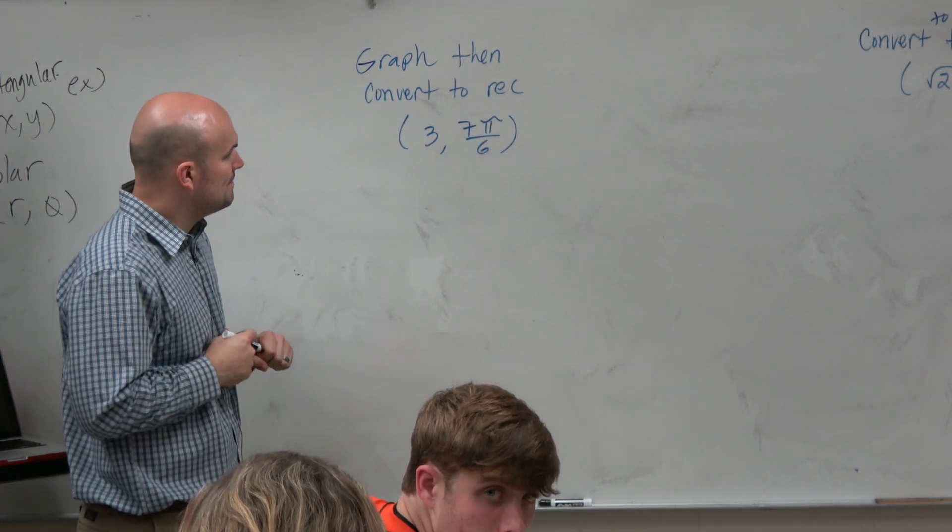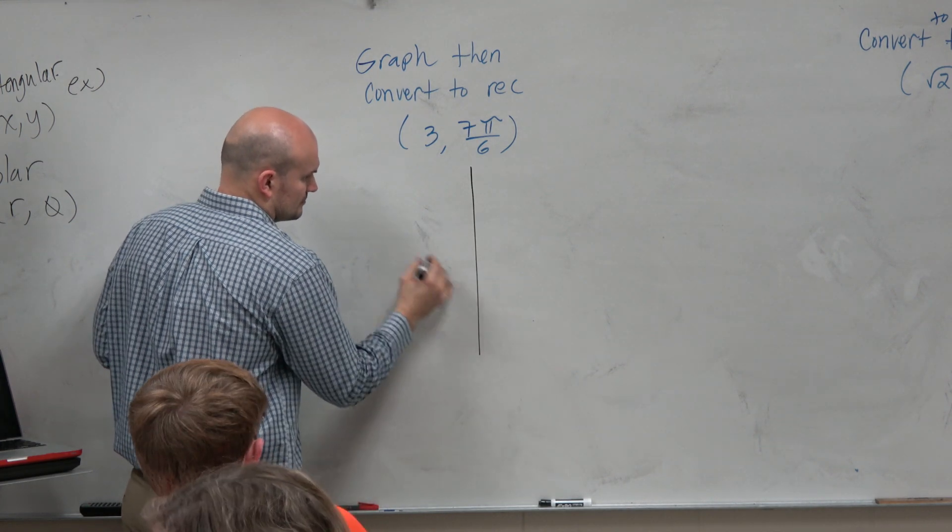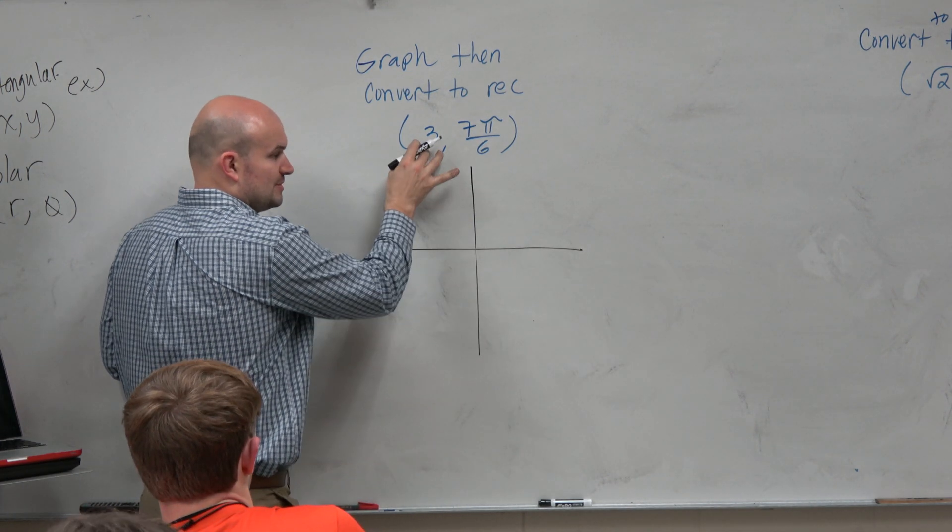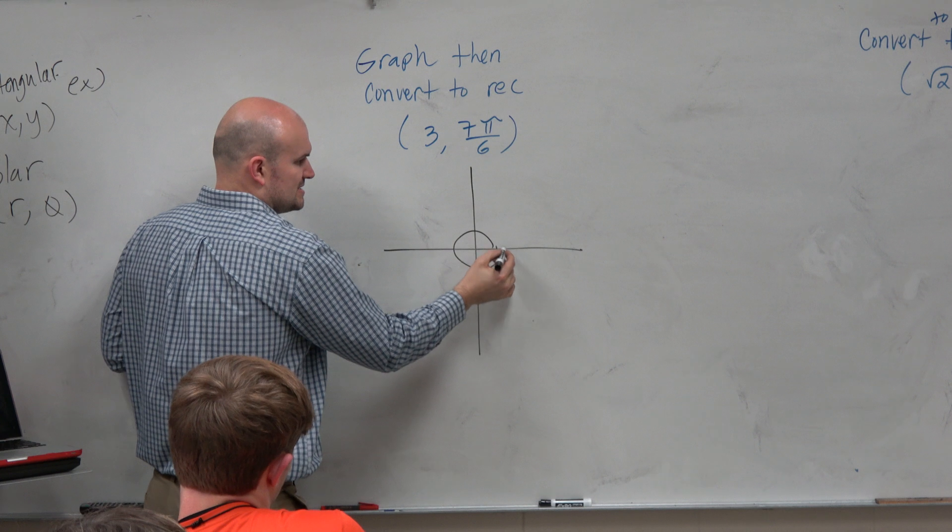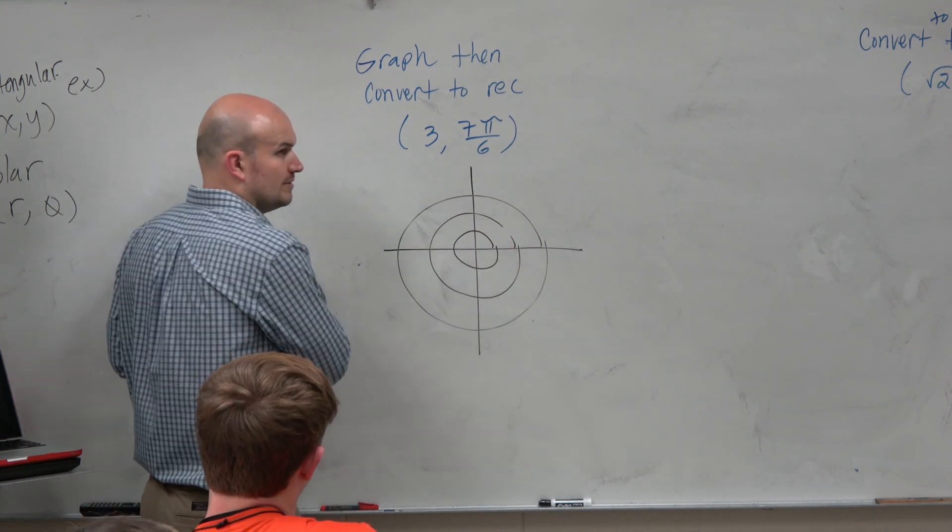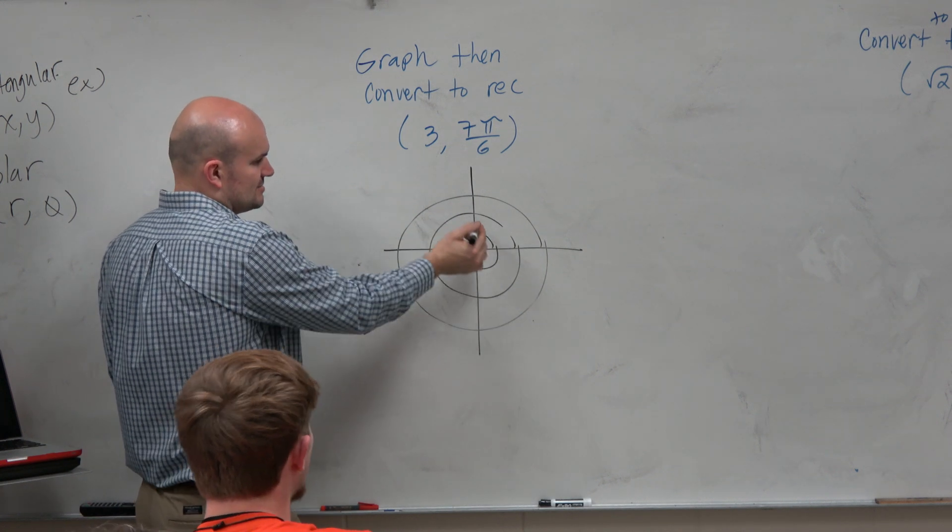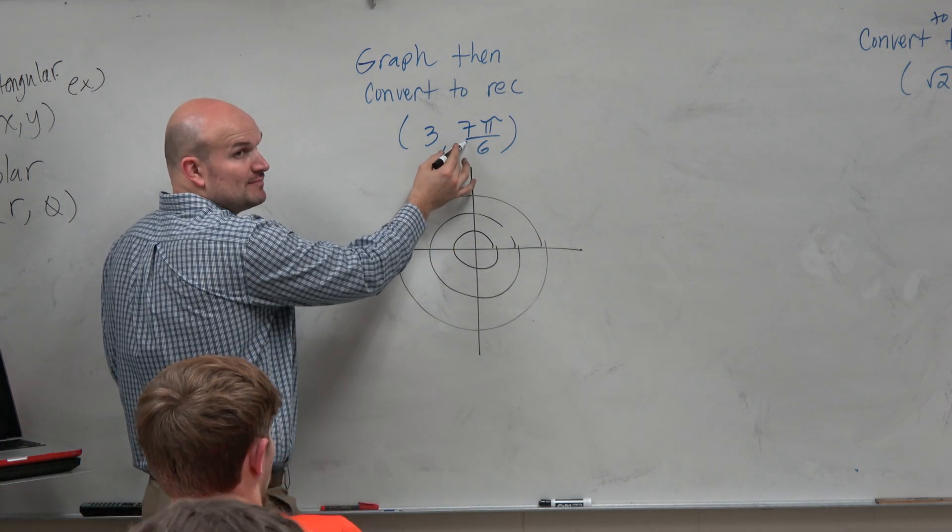So again, guys, to recognize this point here, we basically know 3 is going to represent the distance away from the center. So that's going to be 3 rings here. And so we're going to be on this third point. And then we just need to graph 7 pi over 6.